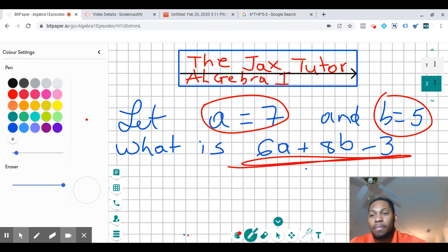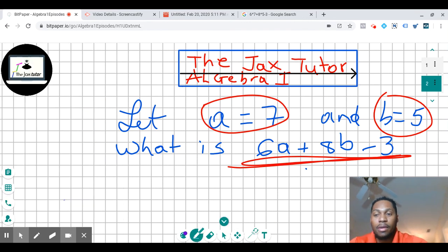Let me change color to purple, maybe. All right. So 6a, so we know a is 7, so that means 6 multiplied by a is 7, I'll put 7 here.